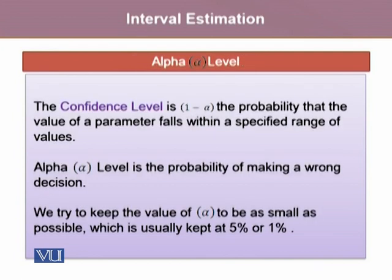The other important value is alpha level. A confidence level is 1 minus alpha which is the probability that the value of parameter falls within a specified range of values. Whereas alpha level is the probability of making a wrong decision. We try to keep the value of alpha to be as small as possible, which is usually kept at 5% or 1%.